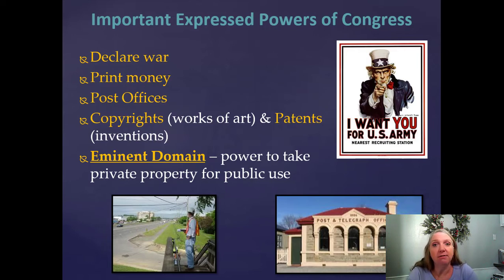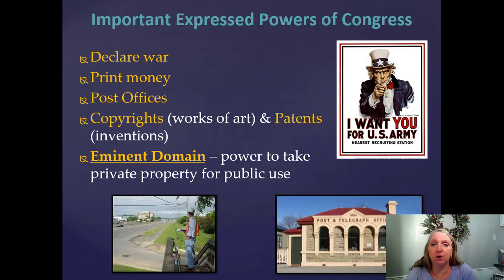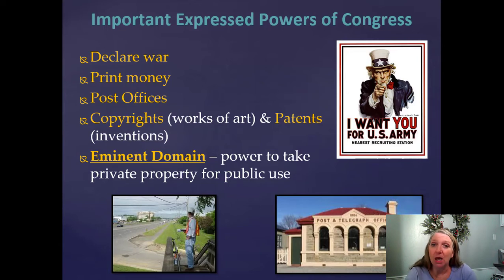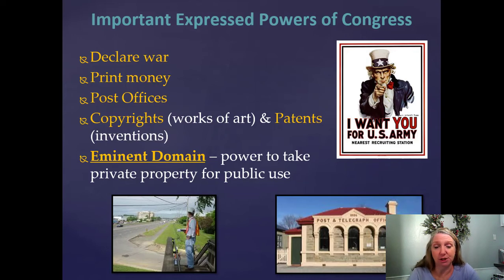Congress also controls post offices — small rural communities depend on their post offices for survival. They determine copyright laws, protecting works of art including paintings, music, and writing. Patents protect inventions. There's also eminent domain — the power to take private property for public use. The government does pay you, but it won't be fair market value; it won't be what you could have gotten selling it yourself. They'll change it into something else, like a highway.